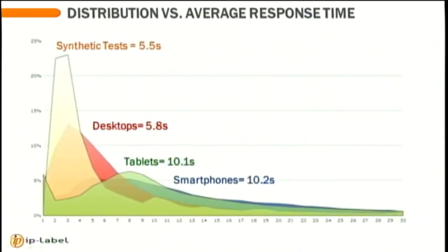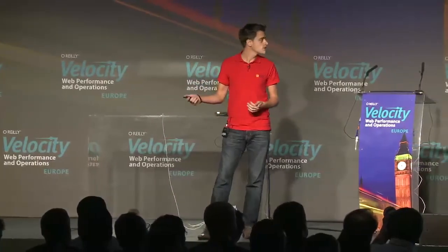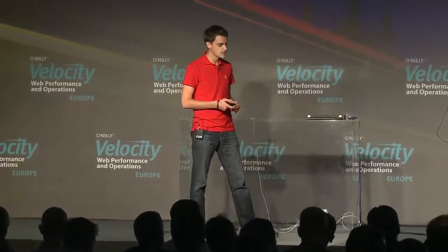Another difference we see is that usually you think about performance as an average. But when you take the distribution — the standard deviation of all the measurements — you would see sometimes that with the same average, you have a distribution difference, because synthetic tests are usually very quick. So they can all be between two and three seconds, whereas your desktop users would be around six seconds, and the same for tablets or smartphones — they can imply very different user satisfactions.